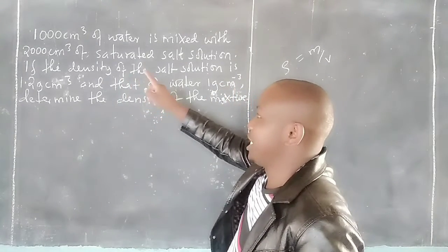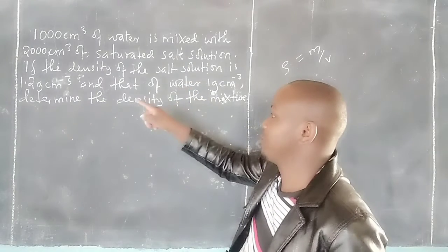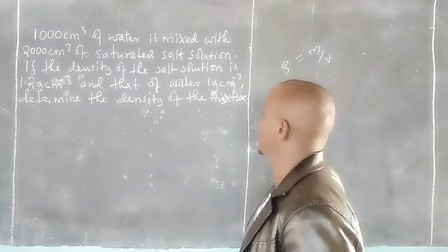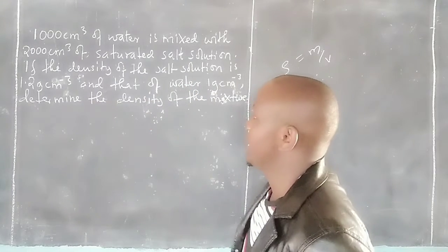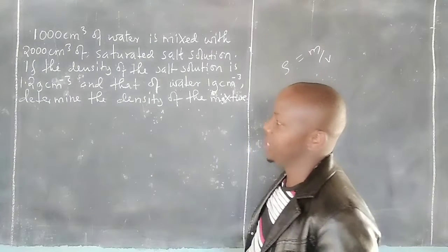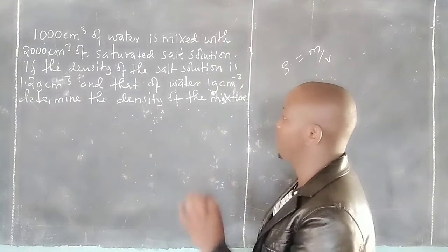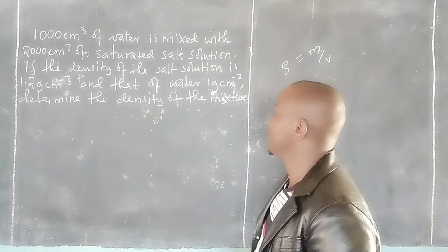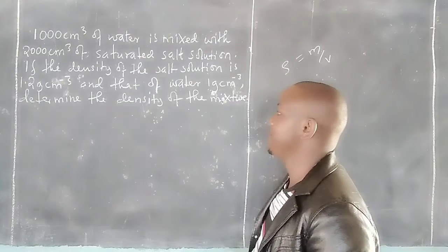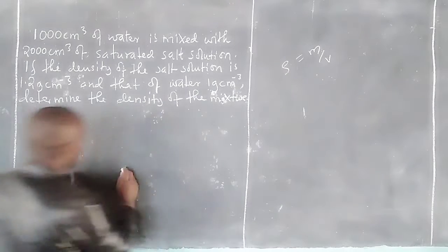We are given 1000 cubic centimeters of water mixed with 2000 cubic centimeters of saturated salt solution. The density of the salt solution is 1.2 grams per cubic centimeter and that of water is 1 gram per cubic centimeter. We need to determine the density of the mixture.